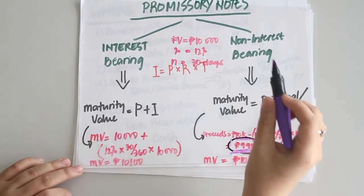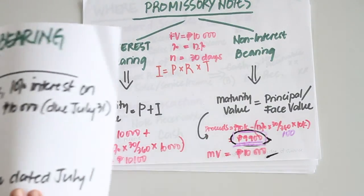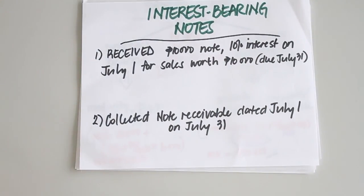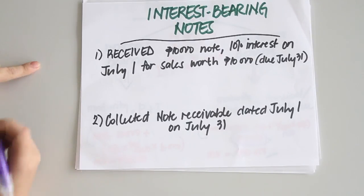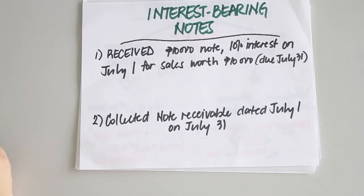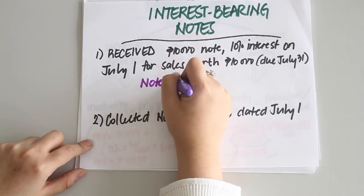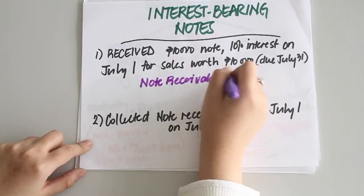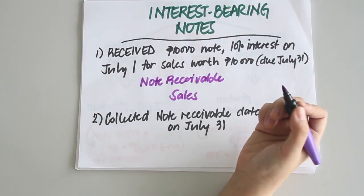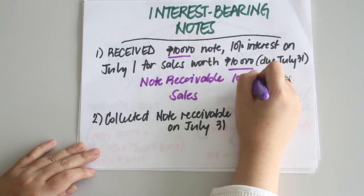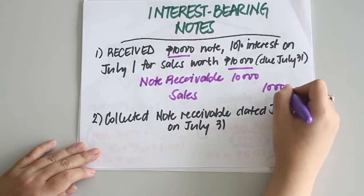Now, for transactions involving interest bearing notes — first, the receipt. For example, you received a 10,000-peso note with 10% interest on July 1 for sales worth 10,000 pesos, due on July 31. To record this, simply debit notes receivable and credit sales, both amounts equal to 10,000 pesos, which is the face value of the note and the total amount of sales made.